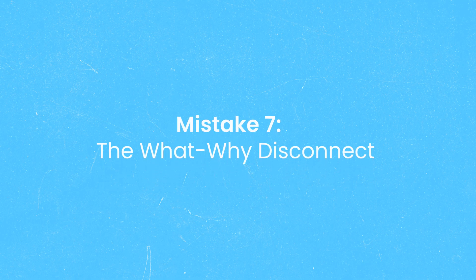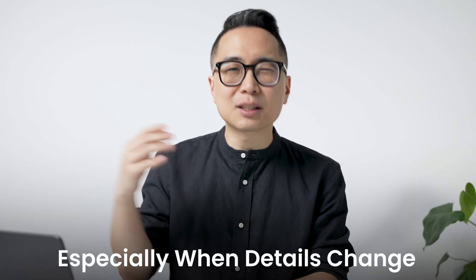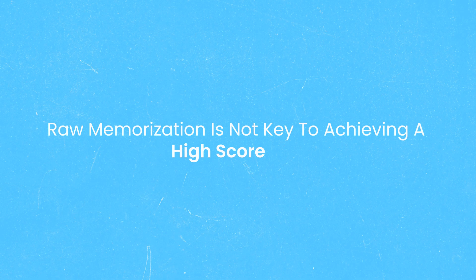Mistake number seven is the what-why disconnect. Top scores come from applying key principles, not just memorizing facts. Most standardized tests — the MCAT, USMLEs, AP tests — measure what we call transfer: if I know something in one context, can I use it in another context, especially when details change? Raw memorization is not the key to elite scores. Understanding why gives you a huge advantage. ChatGPT and other AI are fantastic tools to use in this regard.